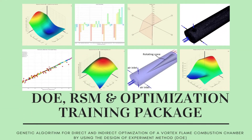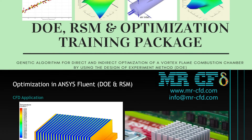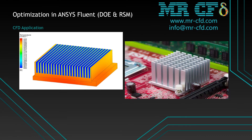In another project, we optimize combustion chamber performance using DOE and RSM. This project aims to optimize the geometrical parameters of the combustion chamber for targets such as maximizing the value of heat generation rate while minimizing the amount of formed pollution. Both direct and indirect optimization methods are used in this project.